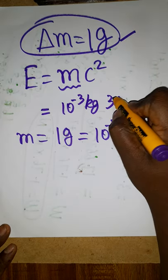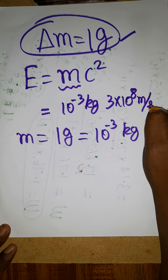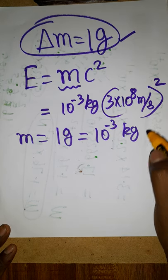Velocity of light is 3 times 10 to the power 8 meters per second. So c squared will be there. The c is the velocity of light.